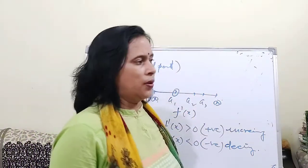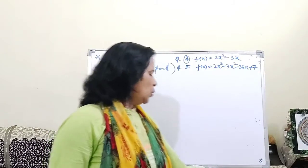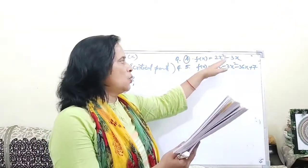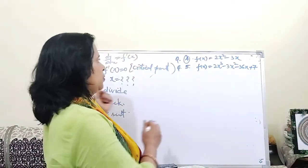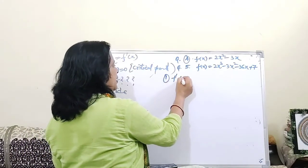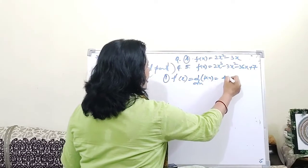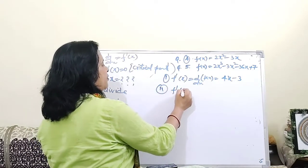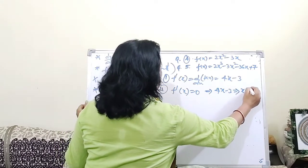Now I will move to problems from the NCERT book. Question 4 of Exercise 6.2: find the interval in which f(x) = 2x² - 3x is increasing or decreasing. First step — differentiate f(x): f'(x) = 4x - 3. Second step — set f'(x) = 0: 4x - 3 = 0, which gives x = 3/4.